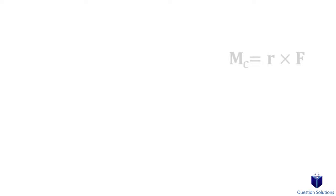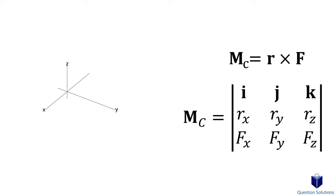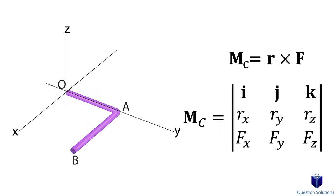When it comes to a vector formulation, we take the cross product between a position vector and the force. Imagine a pipe system like this where we have a couple force applied at these locations. When we find the couple moment, the position vector can be directed from any point on the line of action of one force to any point on the line of action of the other force.